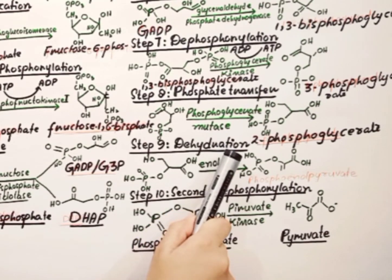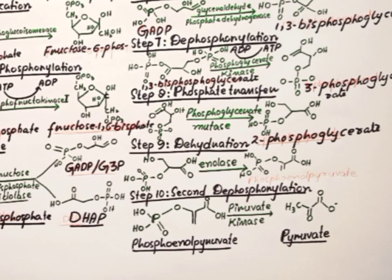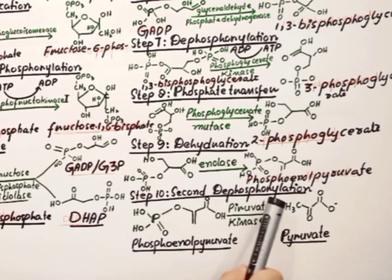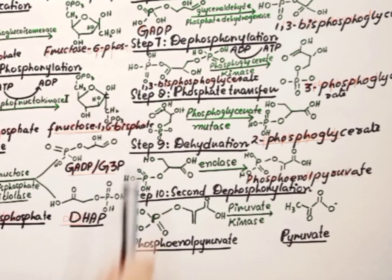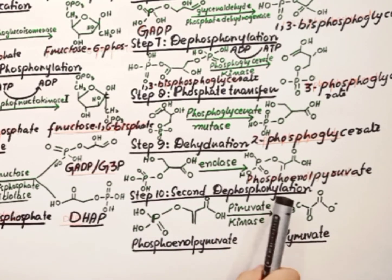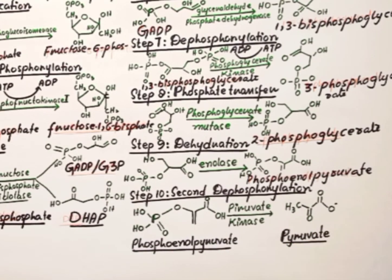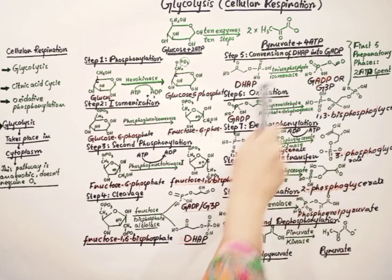In step 9, dehydration — removal of water — takes place, and 2-phosphoglycerate is converted into phosphoenolpyruvate with the help of enolase enzyme. In step 10, the final step, a second dephosphorylation occurs: the dephosphorylation of phosphoenolpyruvate takes place with the help of pyruvate kinase enzyme, converting it into pyruvate.